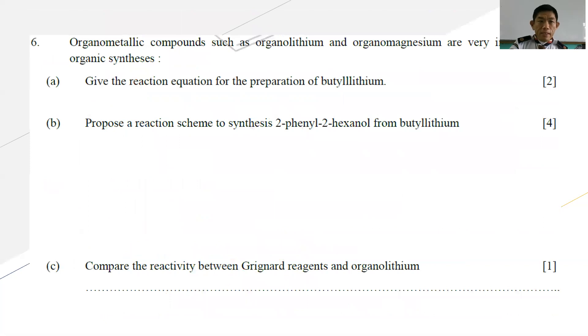Question number six: Organometallic compounds such as organolithium and organomagnesium are very useful in organic synthesis. Part A: Give the reaction equation for the preparation of butyllithium. For the preparation of butyllithium, you have to use a very extreme cold condition. This is the suitable equation where you have chlorobutane with lithium in dry ether under negative 10 degrees Celsius to give butyllithium.